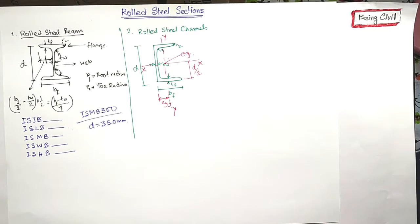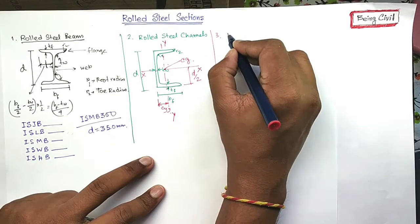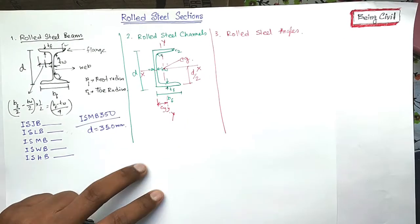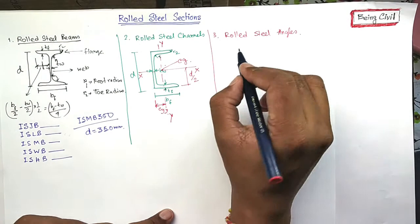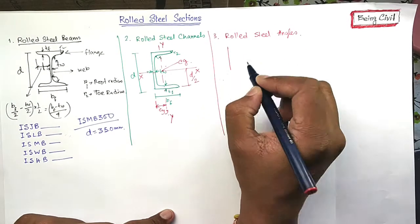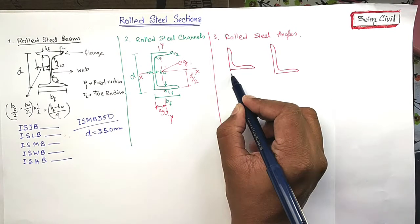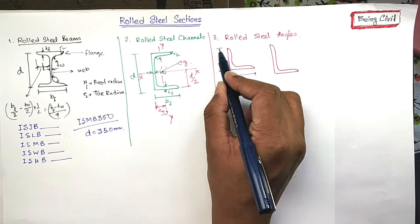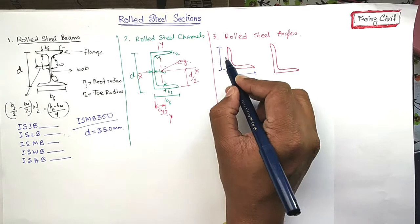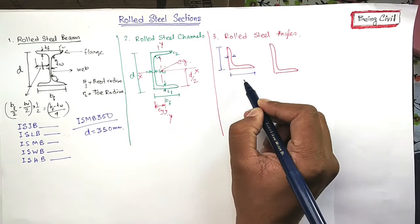Now coming to the next, which is rolled steel angles. Angles are of two types. One is equal angles. Another is unequal angles. Angles are designated as the leg distance and this thickness. Suppose this is 90.